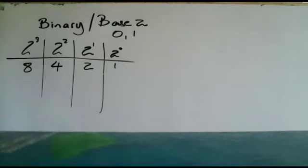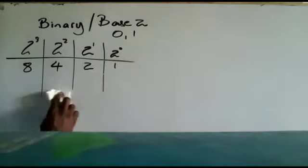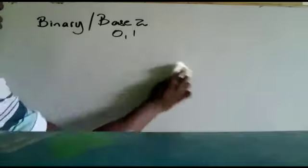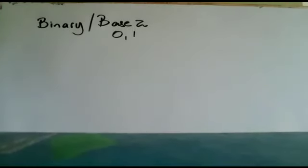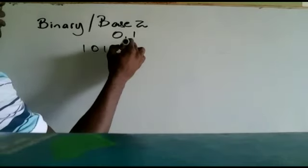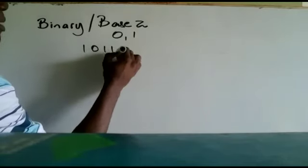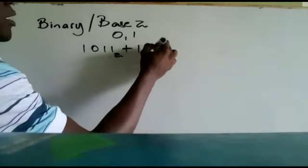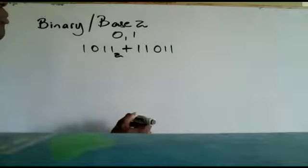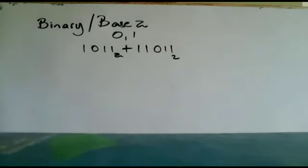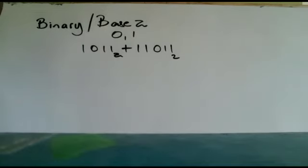Now let's look at adding in base 2. Let's say we intend to add 1011 base 2 plus 11011, also in base 2. We normally put a subscript 2 to show the base.